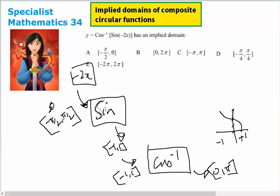So if this is what I put in, minus 2x has to go between minus π over 2 and π over 2. So minus x goes between minus π over 4 and π over 4.